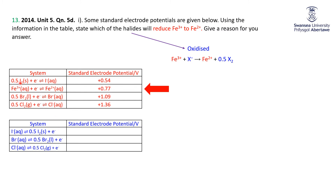Notice that electrons are on the left for the reduction half equations, and electrons are on the right for the oxidations. When we flip the equation from a reduction to an oxidation, we change the sign of the potential. So our oxidation potentials for the halides are minus 0.54, minus 1.09, and minus 1.36. This tells us immediately that halides don't really want to be oxidized back to halogens — non-metals want to gain electrons to become anions, and once formed, they don't want to lose those electrons.